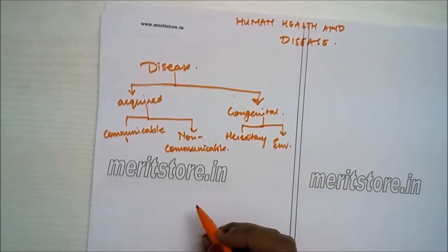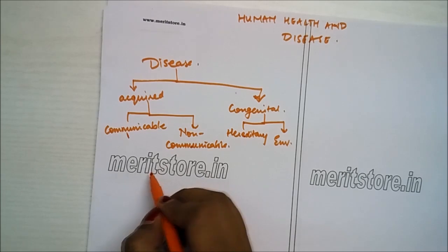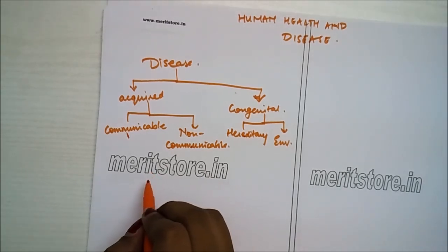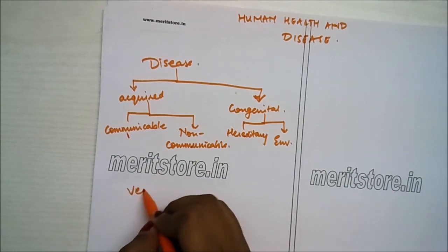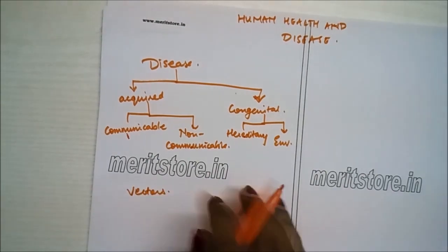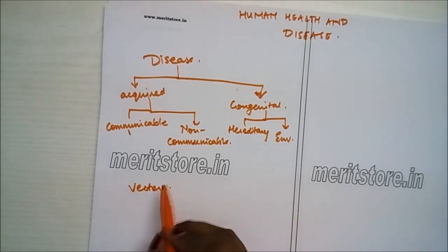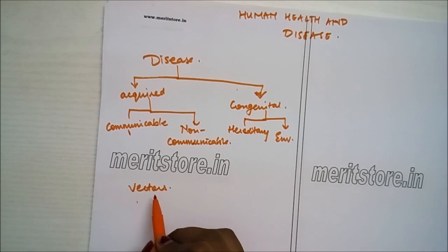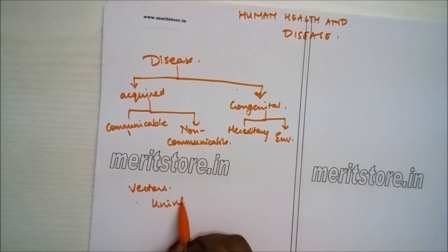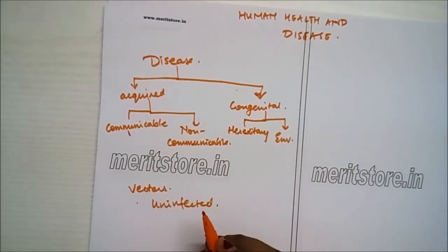A pathogen is an organism that causes certain diseases in animals and plants. Bacteria, viruses, fungi, nematodes, and some algae are included under pathogens. Vectors, on the other hand, do not cause disease themselves but transmit the pathogen from an infected person to a healthy person, thereby spreading the disease. In this process they themselves remain unaffected. Example: female Anopheles mosquito.